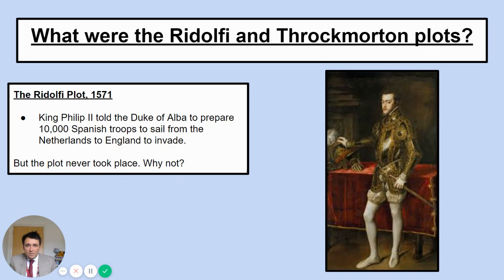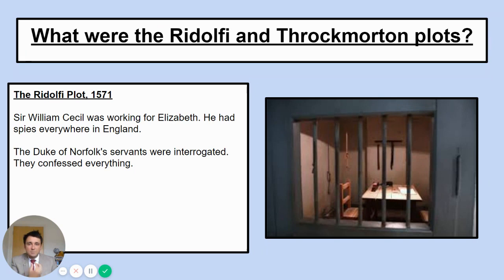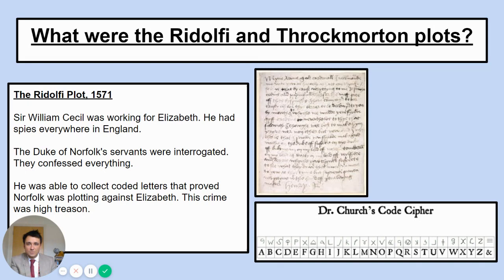But that's as far as it ever got — this plot never actually took place. Elizabeth had someone called Sir William Cecil working for her, with spies everywhere in England, spying in particular on the Duke of Norfolk. After the revolt of the Northern Earls, Norfolk had been let free but was still being watched. Spies monitored who he was seeing. The Duke of Norfolk's servants were questioned and interrogated, and they confessed everything — that he was a Catholic working to bring down Elizabeth. Sir William Cecil also collected letters that proved Norfolk was plotting against her.